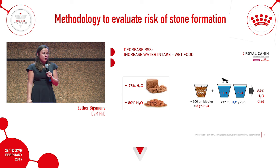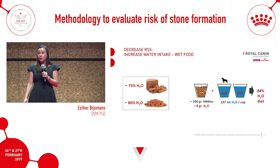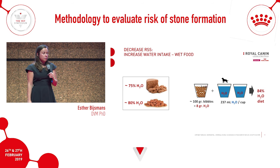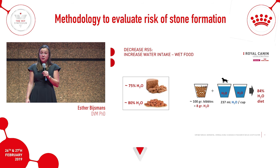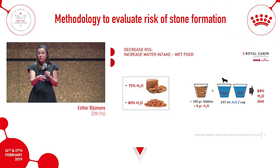A nice rule of thumb for dry food: for every cup of kibbles you give, add two cups of water and mix it in. This works well if owners want to give a particular dry food because of a different pathology, or if the animal doesn't like the texture of wet food. Adding two cups of water to one cup of kibbles will reach the moisture percentage you need.